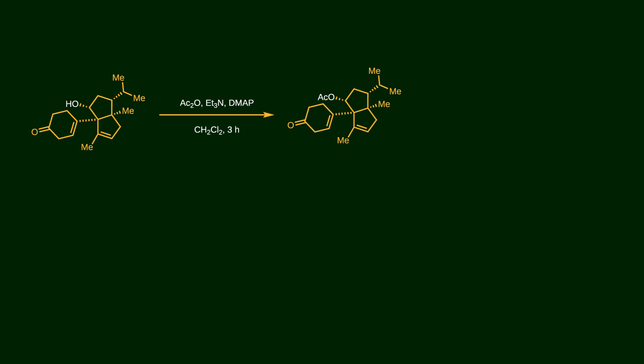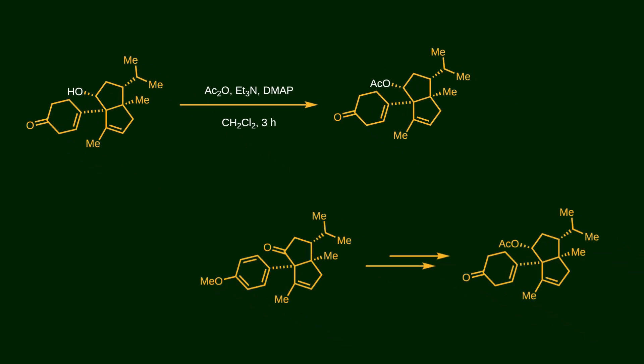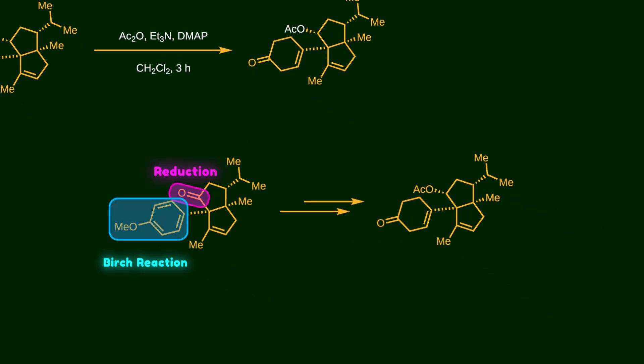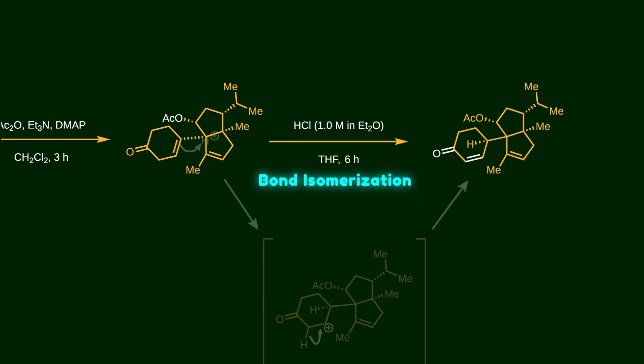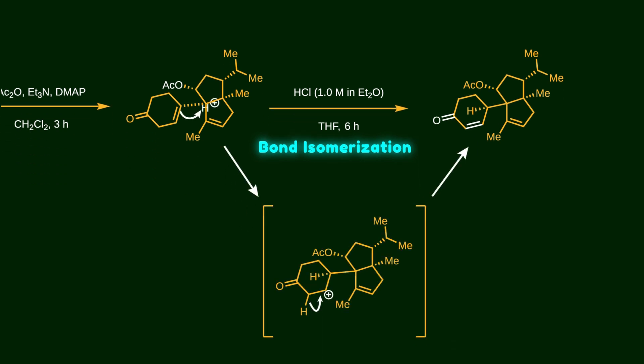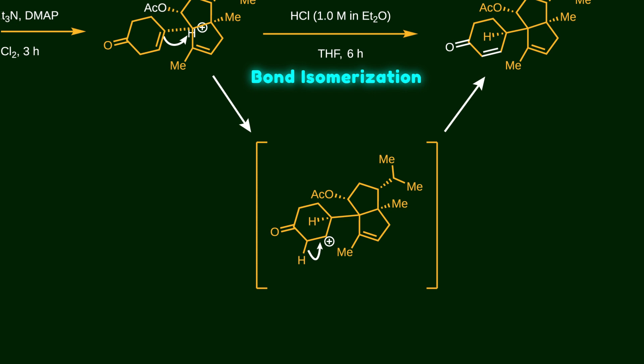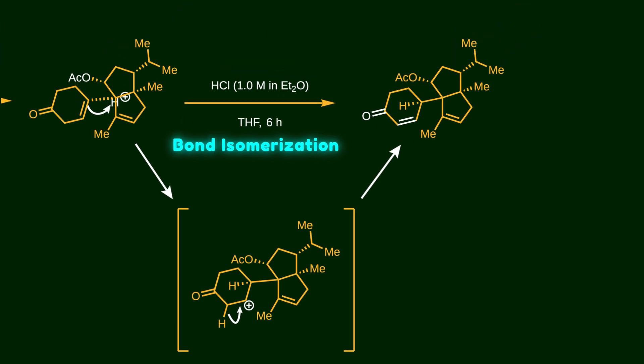Next, the resulting secondary alcohol is protected by acetate. And notice here that the reduction, the Birch reaction, and acetate protection are all done in a one-pot procedure. After that, bond isomerization takes place by adding HCl. Mechanistically, the double bond is protonated in acidic media, leading to the formation of a secondary carbocation center. Then the conjugated product is formed, which is the driving force for this isomerization.